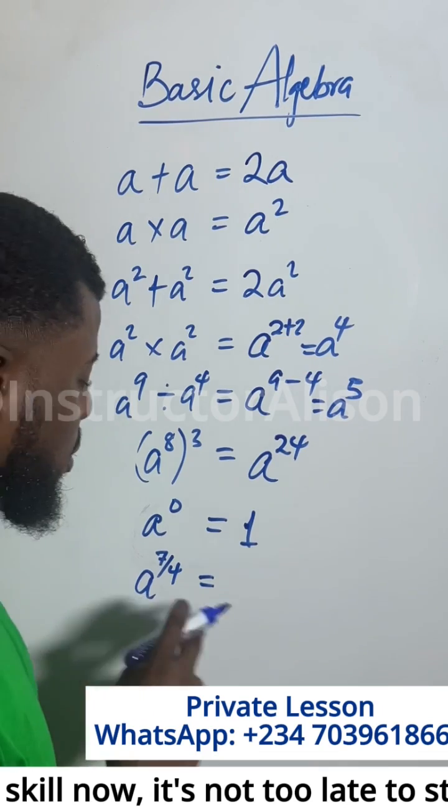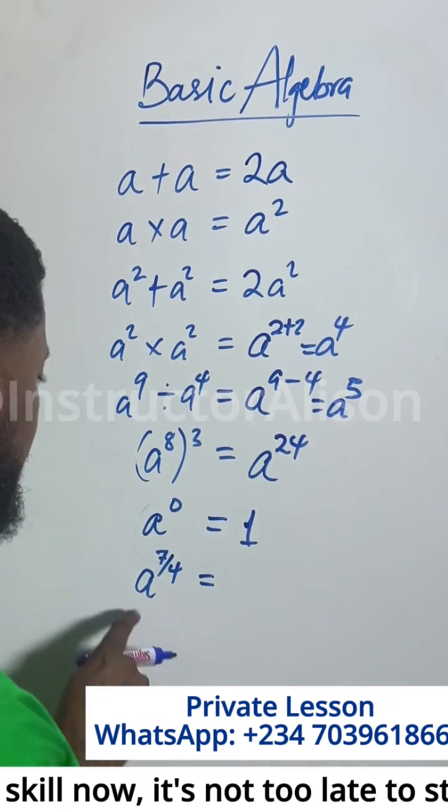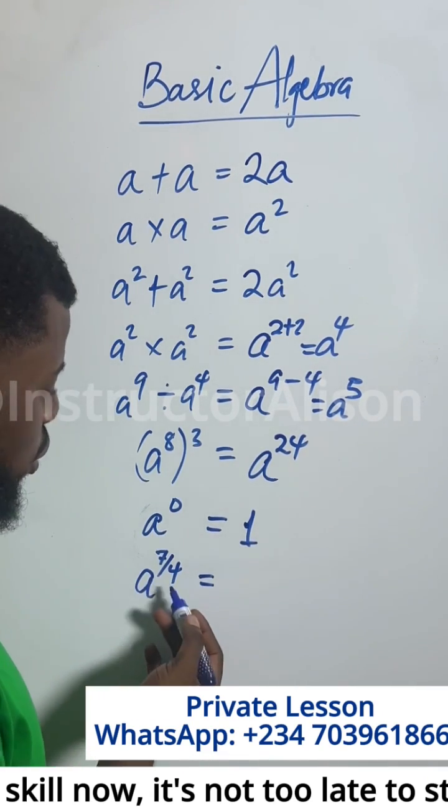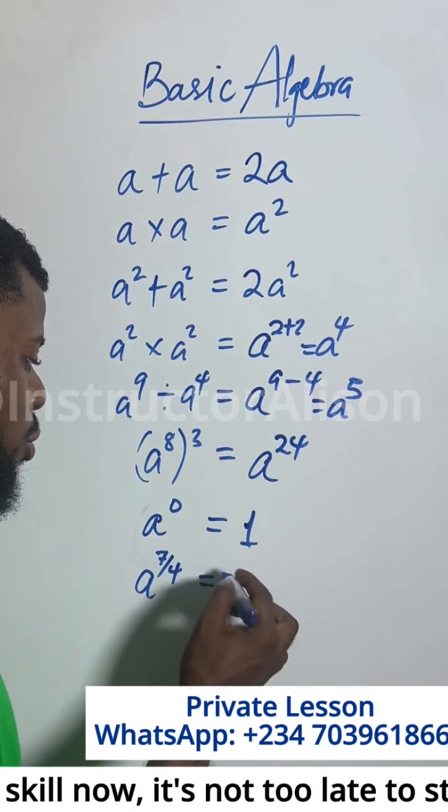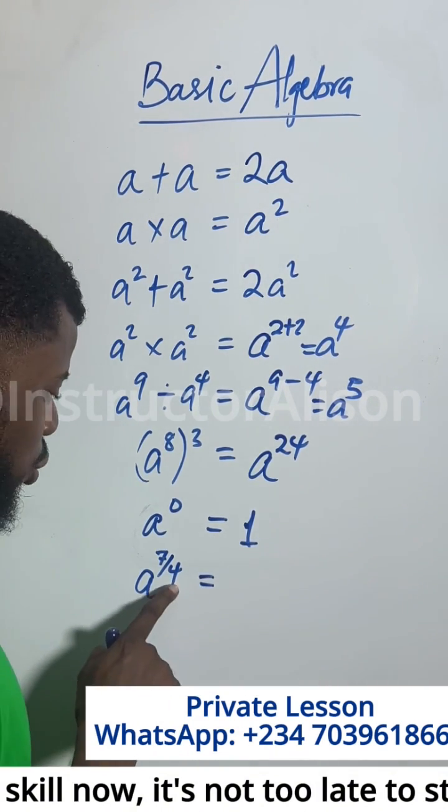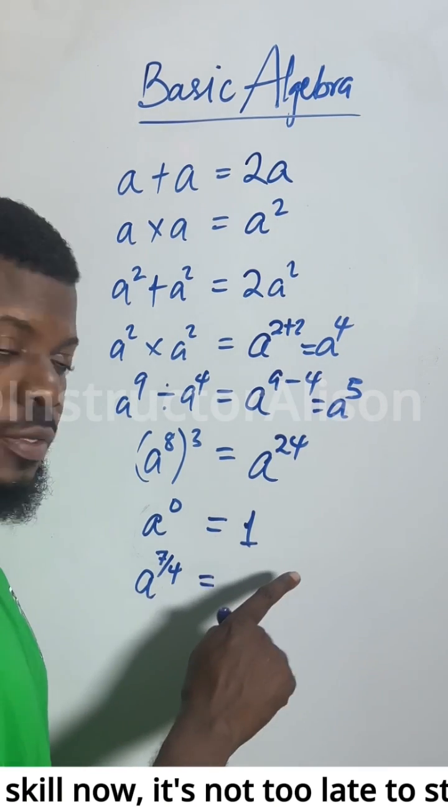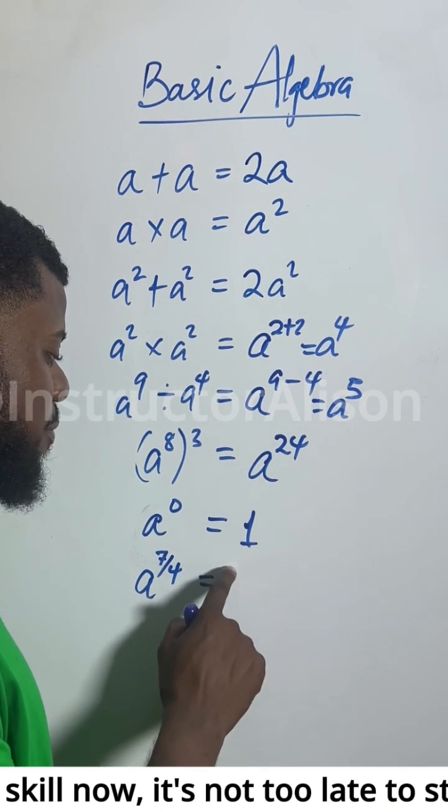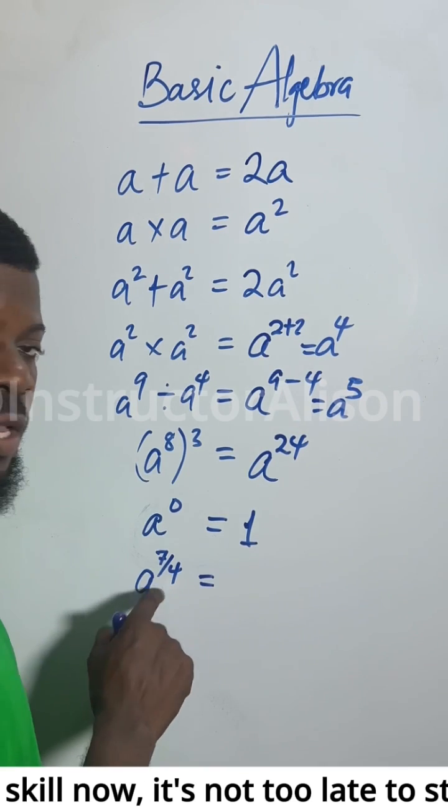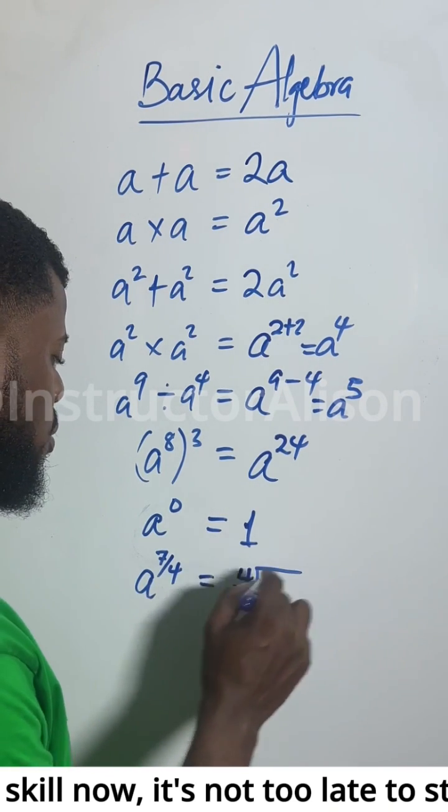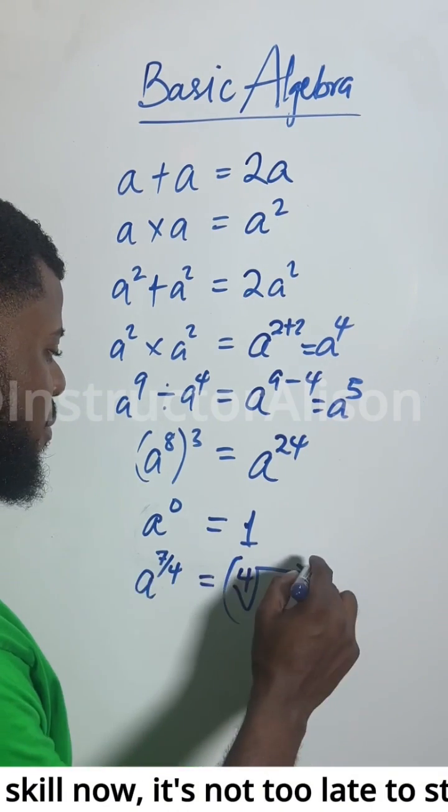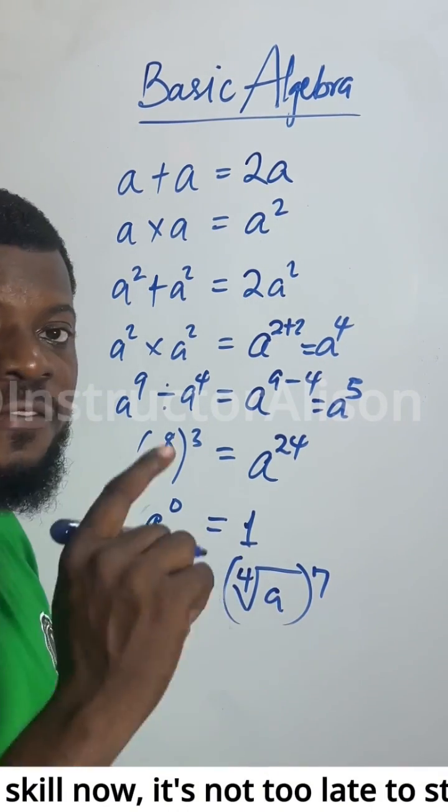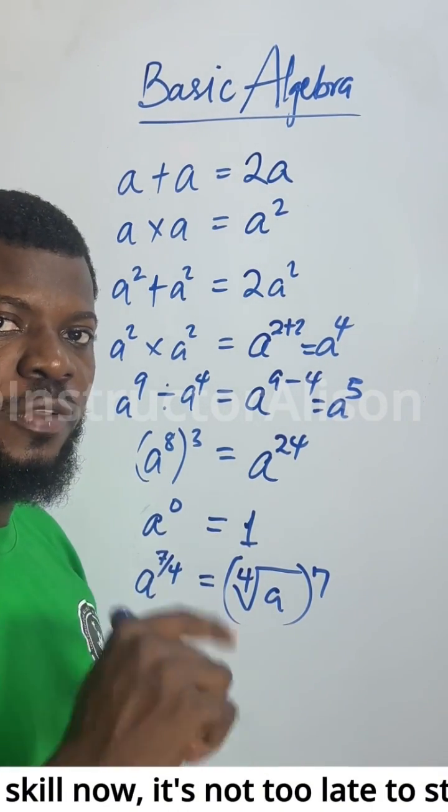So the last one is under fractional index. We have A to the power of 7 over 4. We want to look at the denominator. If it is 3, it changes to become the cube root. If it is 2, we have it to the square root. If it is 5, that would be 5th root. Because it is 4, it will become the 4th root of A to the power of 7. This comes under fractional index, and that's one of the laws of indices.